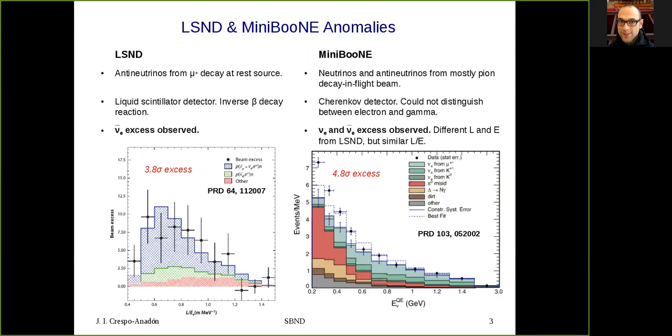MiniBooNE instead used neutrinos and antineutrinos from mostly pion decay in flight beam. It was a Cherenkov detector that could not distinguish between electron and gamma, and they observed both excesses on the electron neutrino and electron antineutrino channels. MiniBooNE had a different baseline and energy from LSND, but a similar L over E ratio. Here, for the neutrino channel, you can see the black data points representing the experimental data and the solid histograms representing the expectation, and there is an excess which amounts to 4.8 sigma.